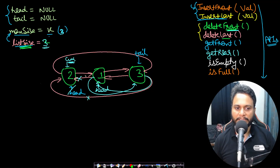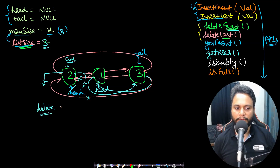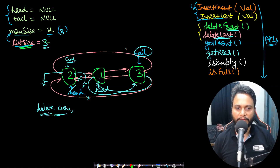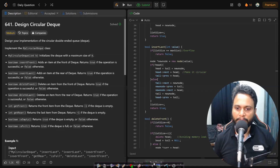After delinking, make the next pointer of current equal to null and the previous pointer of current equal to null. Then use delete to de-allocate that space. Similarly, you can do the same for the tail to implement delete last. If you had only one item, update head and tail to null.